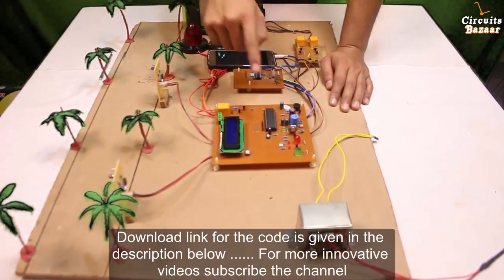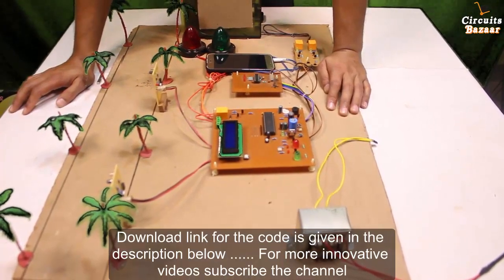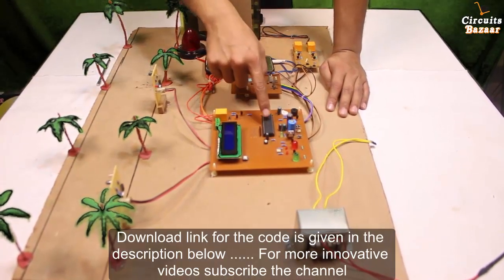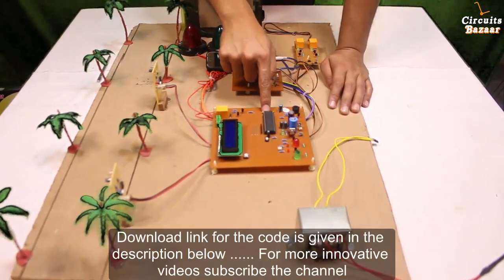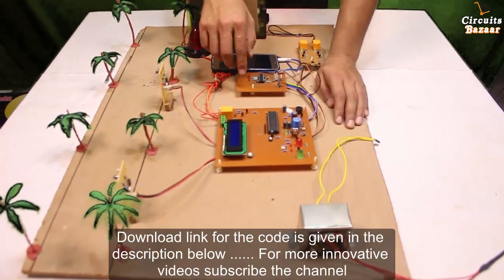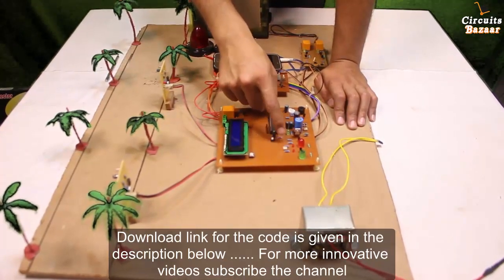And this is the microcontroller which is 8051 microcontroller and the number of this microcontroller is 89C52 in which we have done programming of the complete project. This is oscillator circuit. These two capacitors and this crystal oscillator acting as an oscillator circuit. And this capacitor and resistor acting as a reset circuit over here.